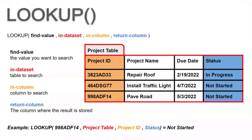First, let's look at the first value that is part of the lookup function, and that's the find value. The find value is simply the value you want to search for. That could be a static value, or it could also be a column reference from your chart, so you could dynamically search for stuff based off that record.